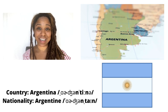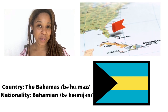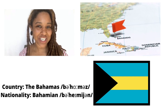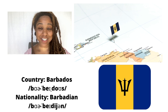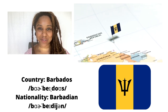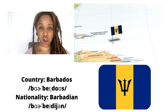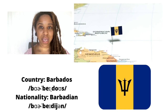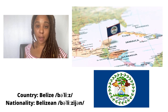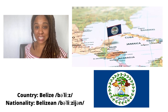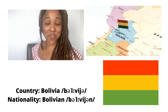Next we have the Bahamas. People who hail from this island nation are called Bahamian. Next up is the Caribbean nation of Barbados. People from Barbados are called Barbadian. Now we're moving on to the Central American country of Belize. People from Belize are called Belizean.